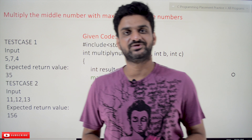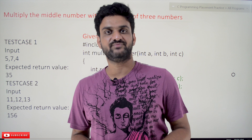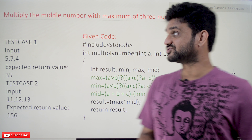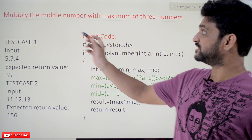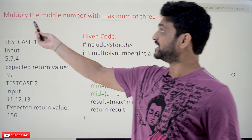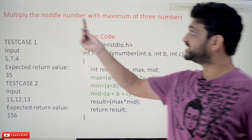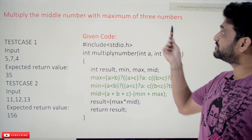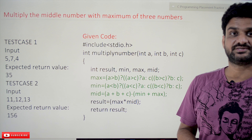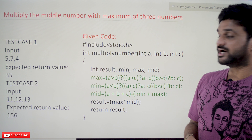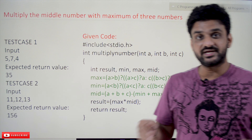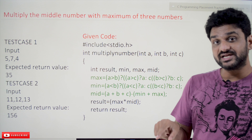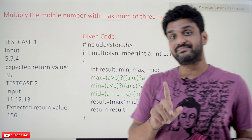Hi, welcome to Learning Monkey. I am Vikram. In this class we'll try to solve a problem called multiply the middle number with the maximum of three numbers. So among three numbers we have to multiply the middle number with the maximum of those three numbers.